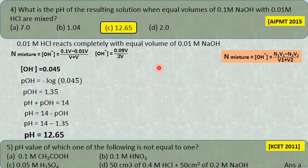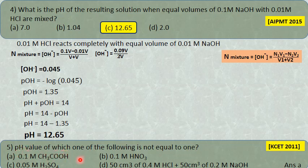Next question: which of the following solutions does not have pH equal to 1? pH = 1 means H⁺ concentration = 10⁻¹ = 0.1. For 0.1 mole of acetic acid: acetic acid is a weak electrolyte and does not dissociate completely, so H⁺ concentration cannot equal 10⁻¹. This itself is the answer.